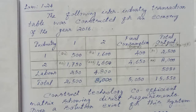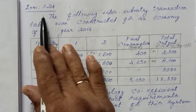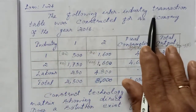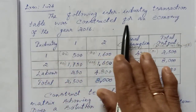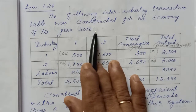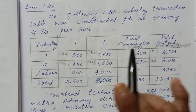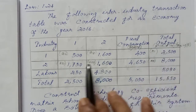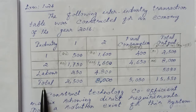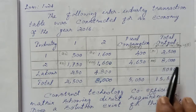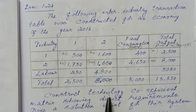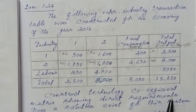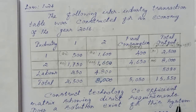Hi students, Example 1.24. The following industry transaction table was constructed for an economy of the year 2016. The table has industries 1 to final consumption and total output, with companies 1 and 2, labor, and total. Construct the technology coefficient matrix showing the direct requirement matrix. Determine if a solution exists for this system.